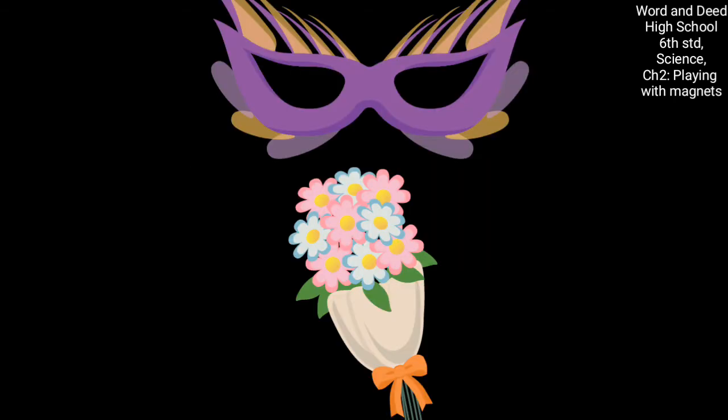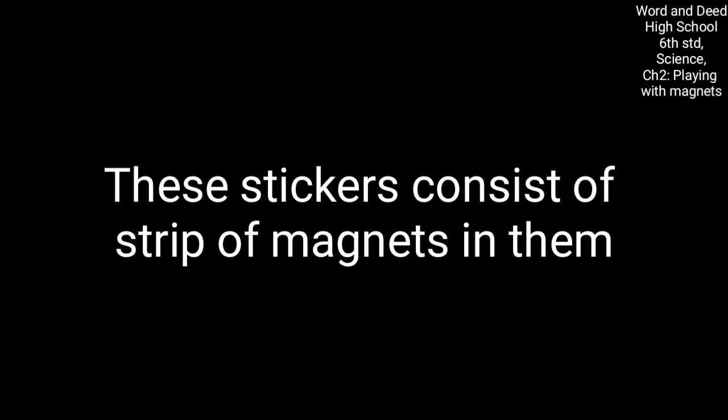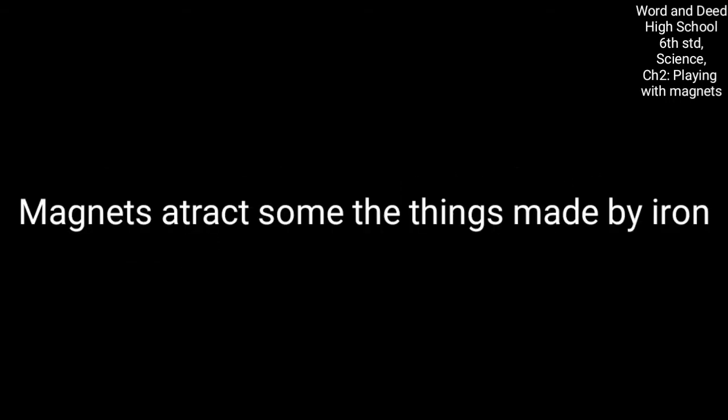And I said some of the stickers get stuck to the doors of almara and refrigerator, right? And the stickers, what do the stickers consist of? The stickers consist of an attracting thing, that is a strip of magnet inside it. Strip of what? Strip of magnets. So these, on the whole, we can understand magnets attract some of the things like the things made by iron. Okay? Like this you can understand.